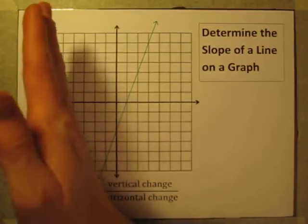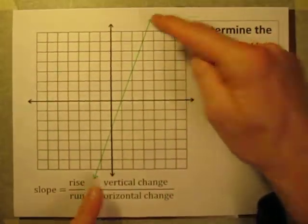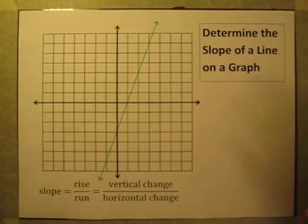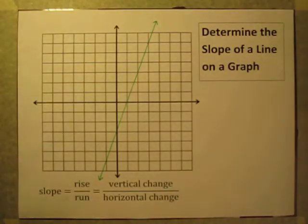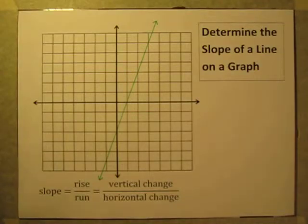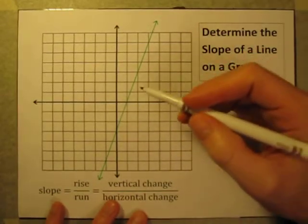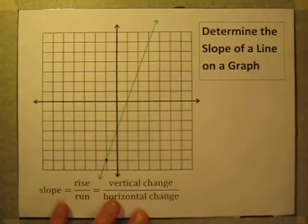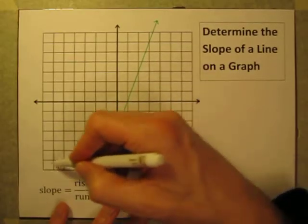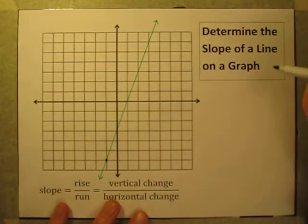I'm looking at this line from left to right, like reading a sentence. To find the slope, we want to find some points on this line and see from one point to the next how much we go up and how much we go to the right. You can pick any two points on the line. I think it's easiest to find points that have integer coordinates — places where the green line hits the graph paper where the grid lines meet.